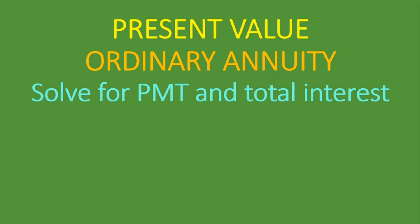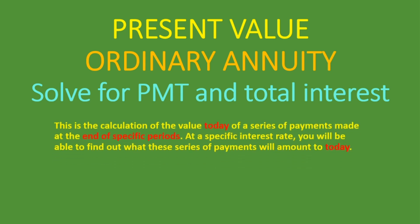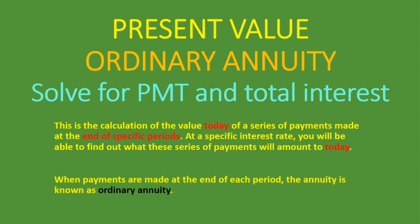What is the present value? This is the calculation of the value today of a series of payments made at the end of specific periods. At the specific interest rate, you will be able to find out what this series of payments will amount to. Why do we call it an ordinary annuity? When payments are made at the end of each period, the annuity is known as an ordinary annuity.